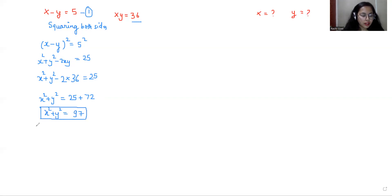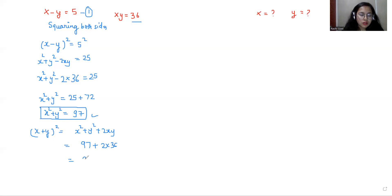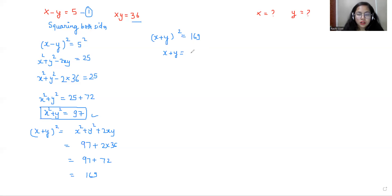Now using the identity: x plus y whole square equals x squared plus y squared plus 2xy. In place of x squared plus y squared I use 97, so 97 plus 2 times 36 equals 97 plus 72 equals 169. So x plus y whole square is 169, and taking the square root, x plus y equals plus or minus 13.